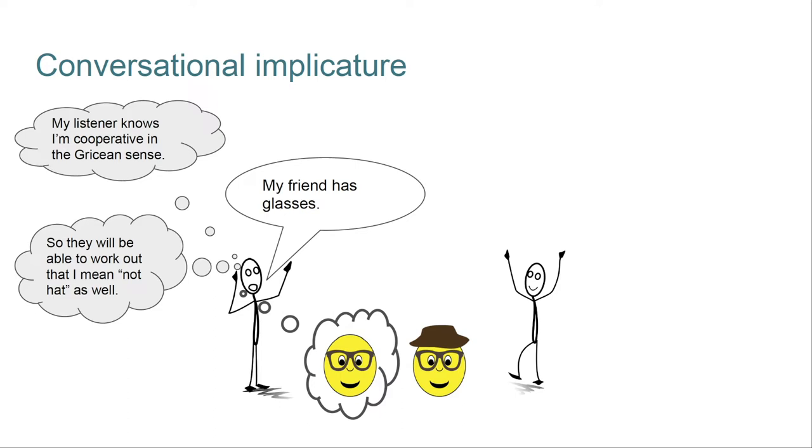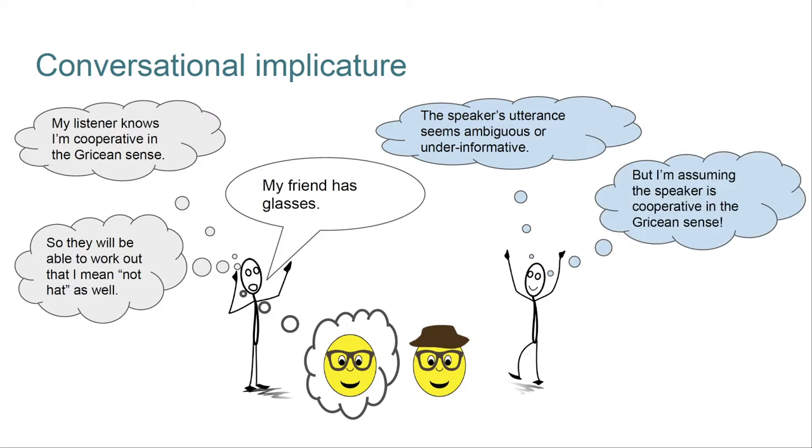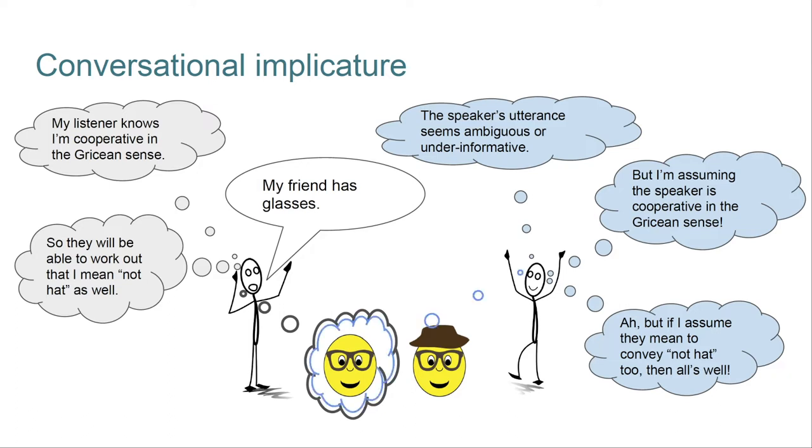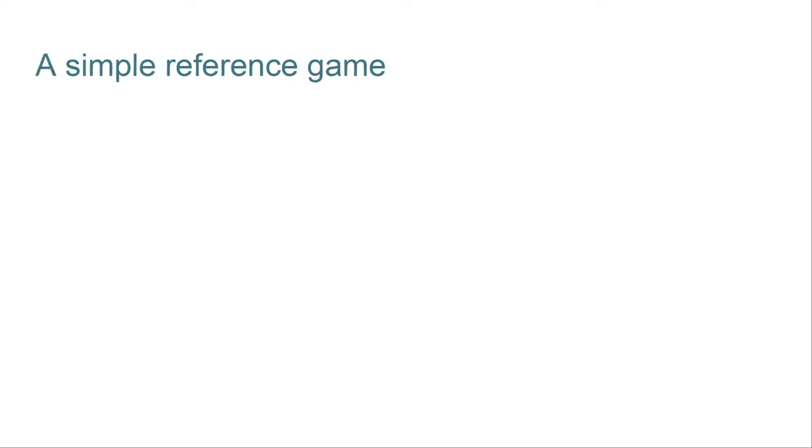From the listener's perspective, we have the core tension that the definition of implicature sets up. The speaker's utterance seems ambiguous or under-informative given their referential goal. But the listener thinks, I was assuming the speaker was cooperative in the Gricean sense, so there's a tension here. And then we get a reconciliation. If the listener assumes that the speaker meant also to convey not hat, then all's well. The speaker is still basically cooperative, and the referential goal succeeds. In a deep sense, this filling in of the proposition not hat is what RSA formalizes.